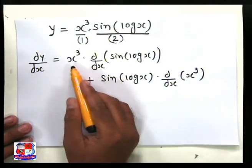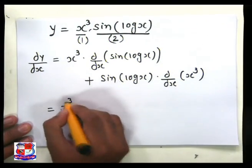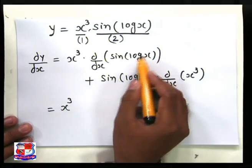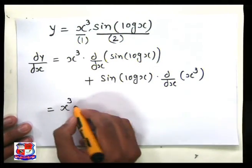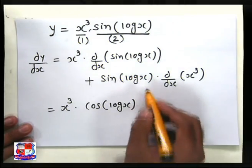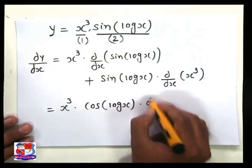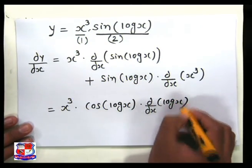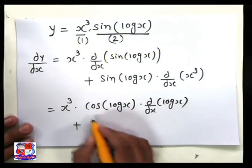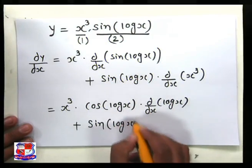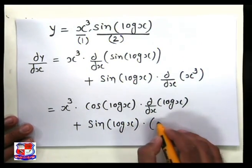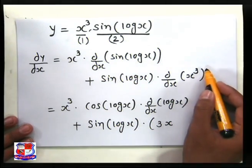Simplifying: x³ as it is, and the differentiation of sin(log x): first assume log x as the inner function, so d/dx of sin(log x) equals cos(log x) multiplied by d/dx of log x, which is 1/x. Then plus sin(log x) as it is, and differentiation of x³ brings the power forward: 3 times x squared.